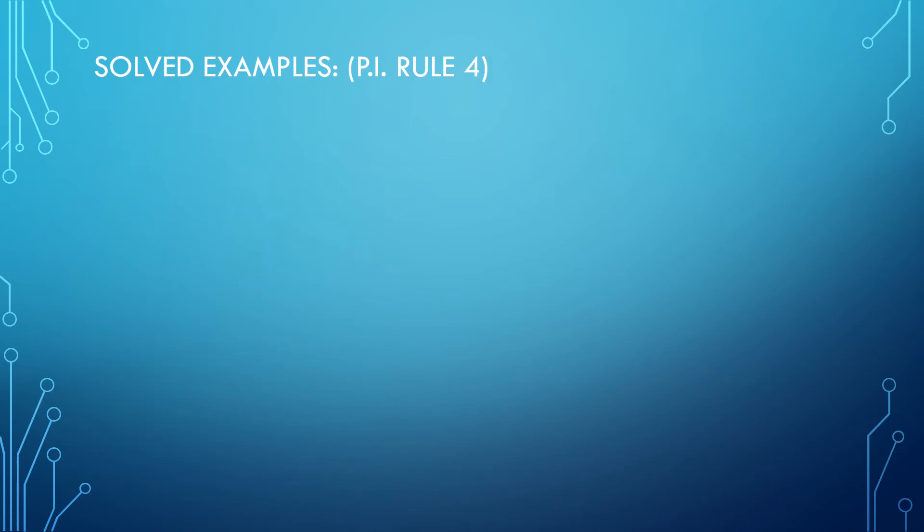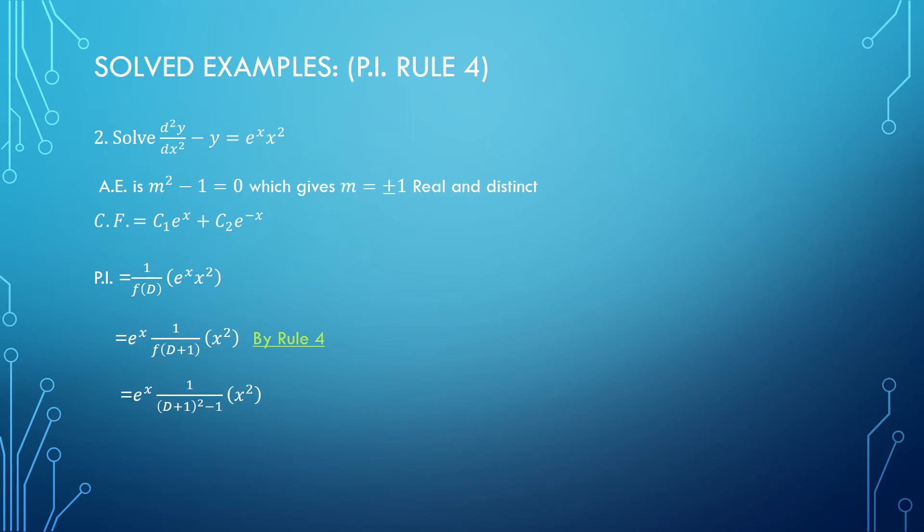Let us look at another example on Rule 4, where I have a combination of e to the power x with x², that is algebraic function and exponential combination. Again I will go with complementary function—real and distinct roots are there. For particular integral, my rule says I have to take e to the power x out and d will be replaced by d plus 1.